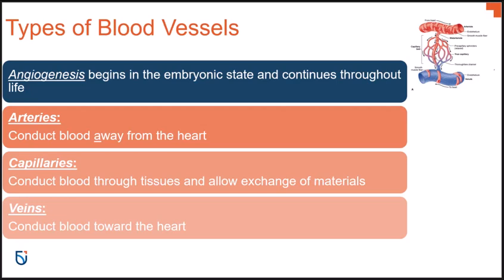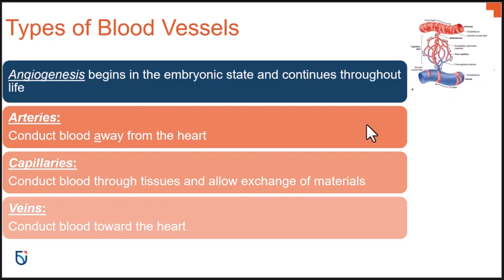We have arteries, capillaries, and veins as the main structures. Arteries are responsible for conducting blood away from your heart to the rest of your body. Veins conduct blood towards your heart, away from the tissues. Capillaries are a small network of vessels found within tissue that allow for the exchange of material. Oxygen and nutrient-rich blood comes through the artery, reaches the capillary, diffuses into the tissue, and then waste products and deoxygenated blood are picked up by the venous system and travel back toward the heart.